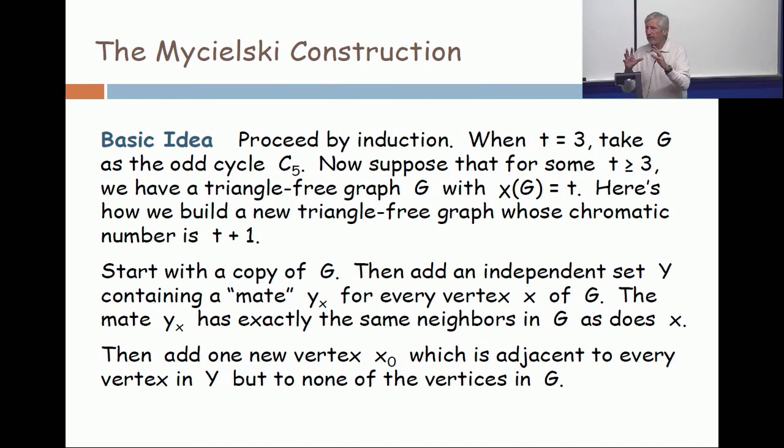This new graph is going to be about twice as big. Only twice. Compare it with the construction we just did. This is slow growth. Here's what you do. Take your old graph and for every vertex put a mate and the mates form an independent set. And then the mate has some neighbors down in the original graph. It has the same neighbors as its friend, as its partner.